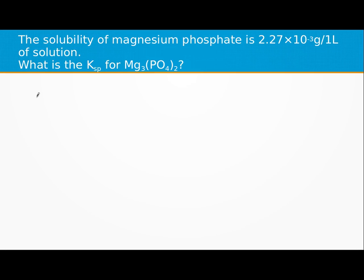All right, we have the solubility of magnesium phosphate being 2.27 times 10 to the negative third grams per liter.